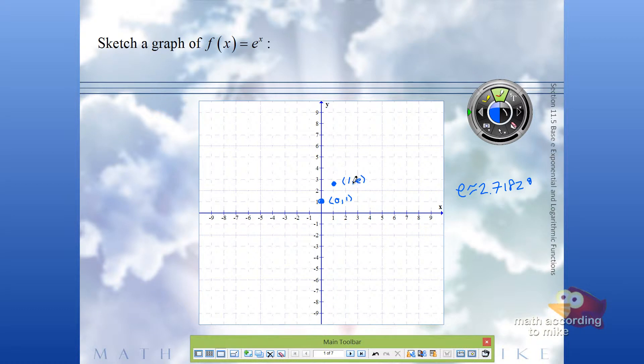The other thing is, remember, all exponential functions that are not being transformed have a horizontal asymptote at y equals 0. And they have like an L, or in this case, a j-shaped curve, because since e is bigger than 1, it should be an increasing exponential function.